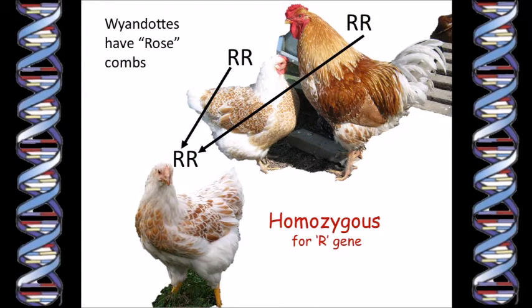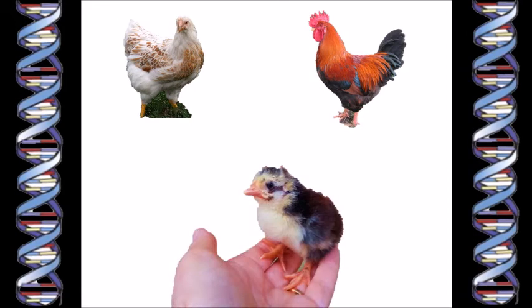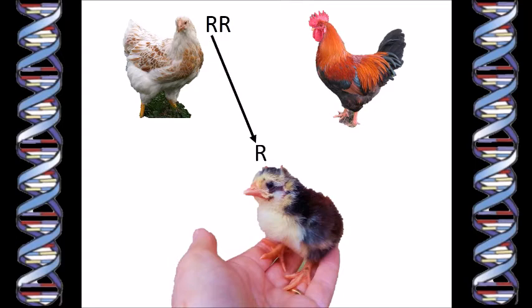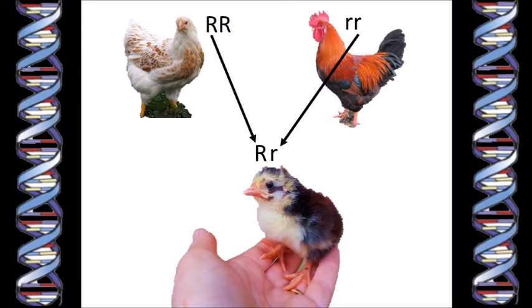Let's use the standard nomenclature for the rose comb gene, which is a capital R. Now what happens if we cross our purebred Wyandotte chicken with a purebred leghorn? Our new baby chicken will get one gene for comb shape from its mother and one gene for comb shape from its father. The purebred Wyandotte is homozygous for the rose comb gene, so the only gene she can pass on is the rose comb gene — the capital R. The purebred leghorn is homozygous for the single comb gene, so the only gene he can pass on is the single comb gene, which is usually represented by a little letter r.